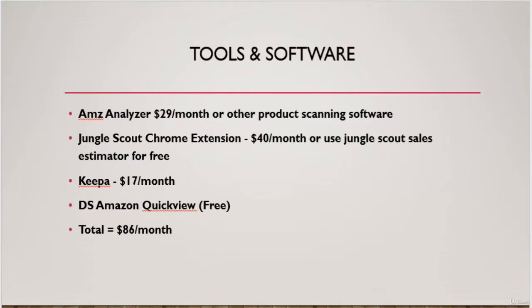Second is Jungle Scout Chrome Extension, or you can simply use Jungle Scout Sales Estimator for free online. Jungle Scout Chrome Extension is $40 a month, but you can just use the free online estimator if you don't want to spend the money. They help you estimate the monthly sales on a product so you can figure out how much a product is actually selling.